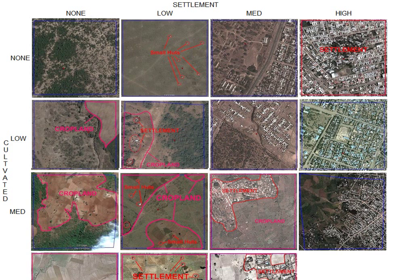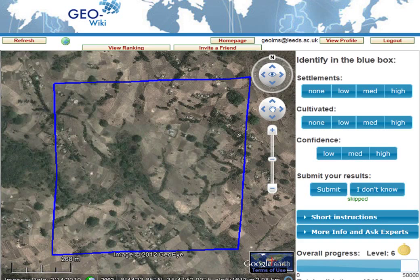The idea is very simple. If areas have settlements, or areas are already cultivated, and these same areas are where large-scale land acquisitions will take place, then there will undoubtedly be conflicts, displacements of population, and effects on the local farmers and their livelihoods. Using Google Earth, we asked hackathon participants to examine the imagery over Ethiopia to identify different levels of settlement and cultivation, from none to high.